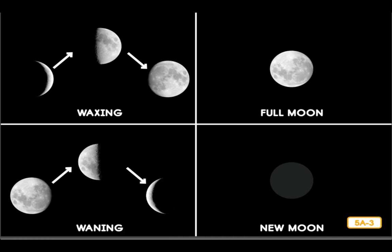On some nights it looks like there is no moon at all. Sometimes the moon is between the sun and the earth, and the side of the moon facing the earth does not reflect any sunlight. When this happens, the side of the moon facing the earth is dark — this is called a new moon. When there is a new moon, we can't actually see it because no light is reflecting off the moon.